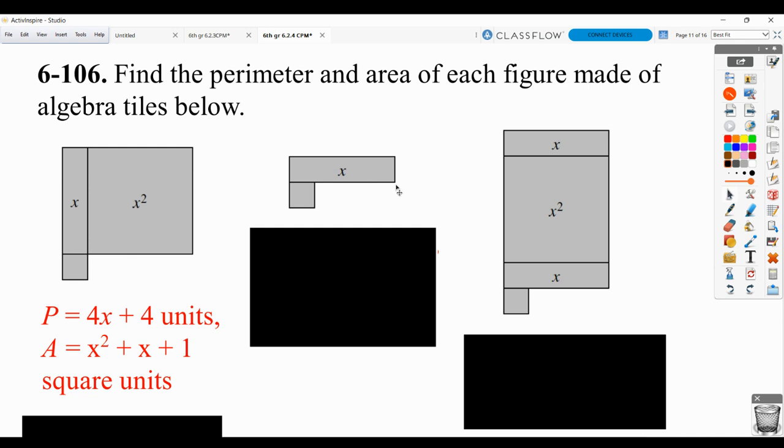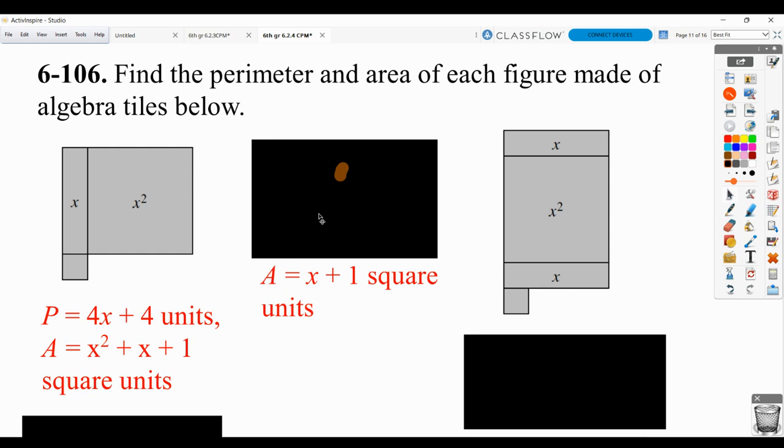For this one, area is always going to be the easiest. So you've got a tile of x, a tile of 1. So your area is just going to be x plus 1. Again, square units.